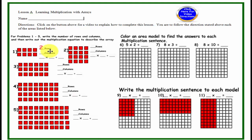So how many rows do we have? 2. How many columns do we have? 4. And our multiplication will be 2 times 4 equals 8. This is what you are going to do for the first sections 1 through 5.